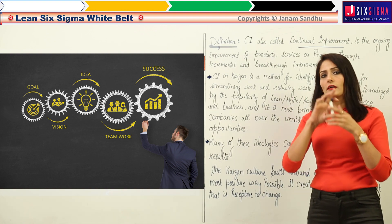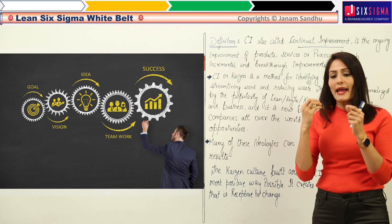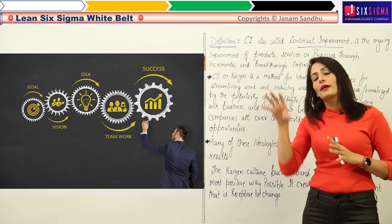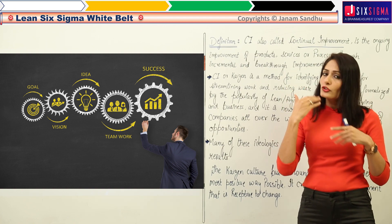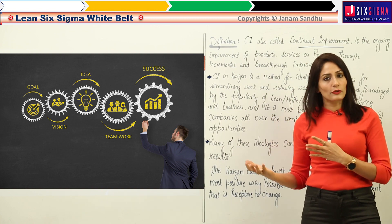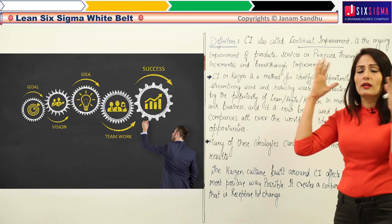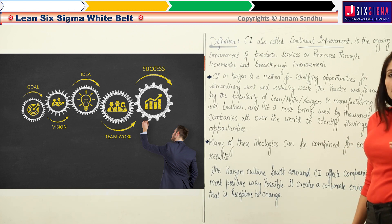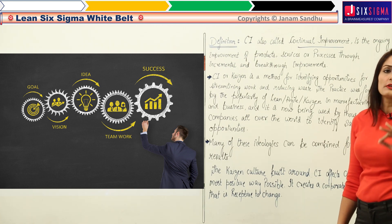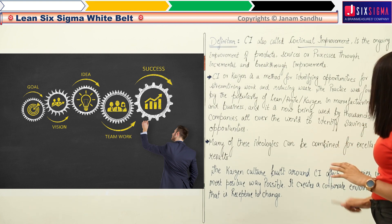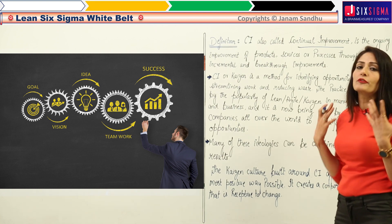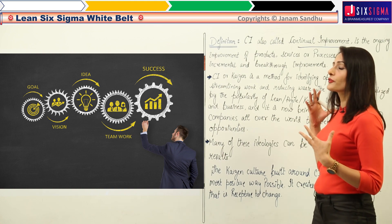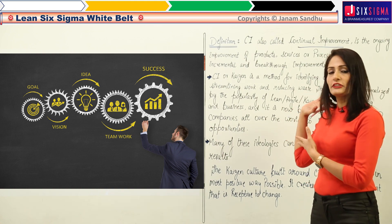Many of these ideologies can be combined for excellent results — for example, combining Lean and Six Sigma, or using TQM. As I've discussed, not every problem can be solved with Lean or Six Sigma alone; for various different problems there are various methodologies, all coming under the umbrella of continuous improvement. The Kaizen culture built around continuous improvement affects companies in the most positive ways and creates a corporate environment that is receptive to change for the better. This final image is a perfect representation of how continuous improvement can lead you to success.